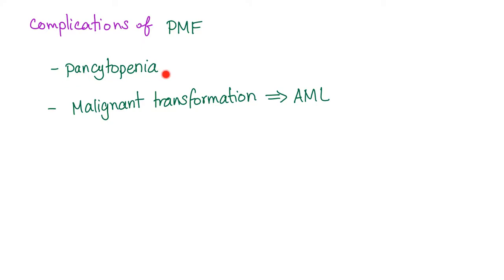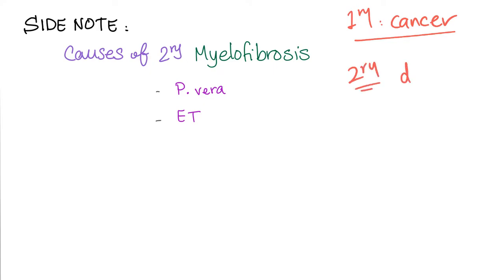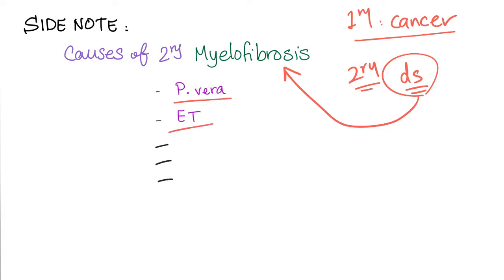Complications of primary myelofibrosis include pancytopenia later in the disease and malignant transformation to AML. Causes of secondary myelofibrosis: in this video we discussed primary myelofibrosis as a primary cancer. Secondary myelofibrosis is when another disease leads to bone marrow fibrosis — for example, polycythemia vera or essential thrombocytosis. There are many other causes; please let me know in the comments.